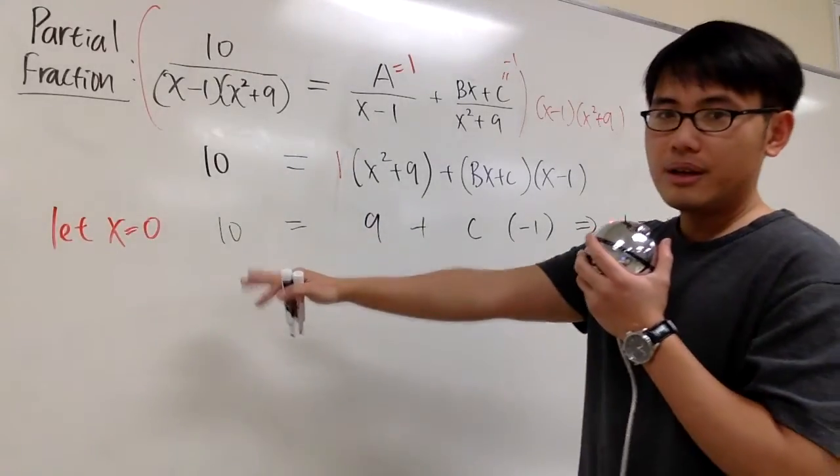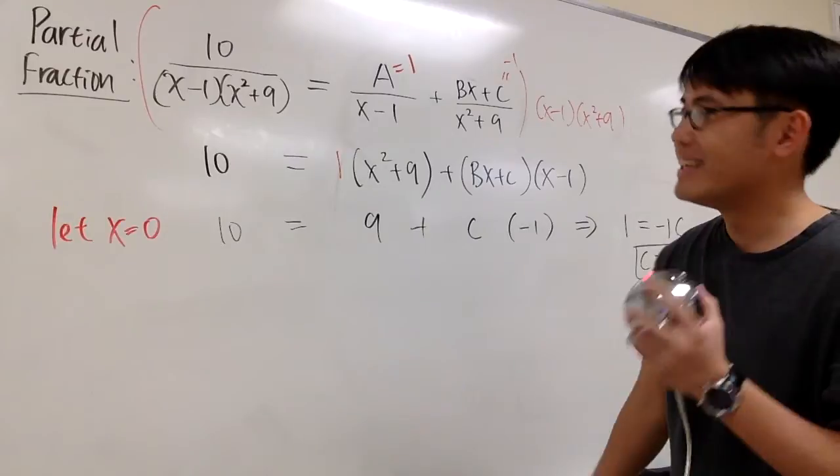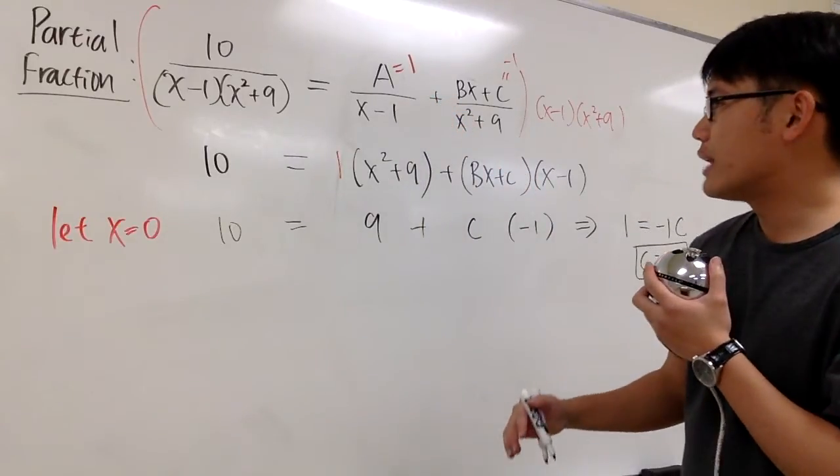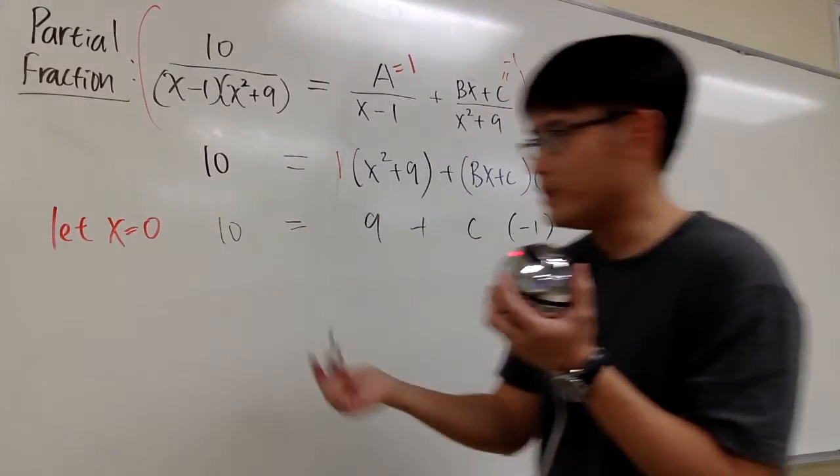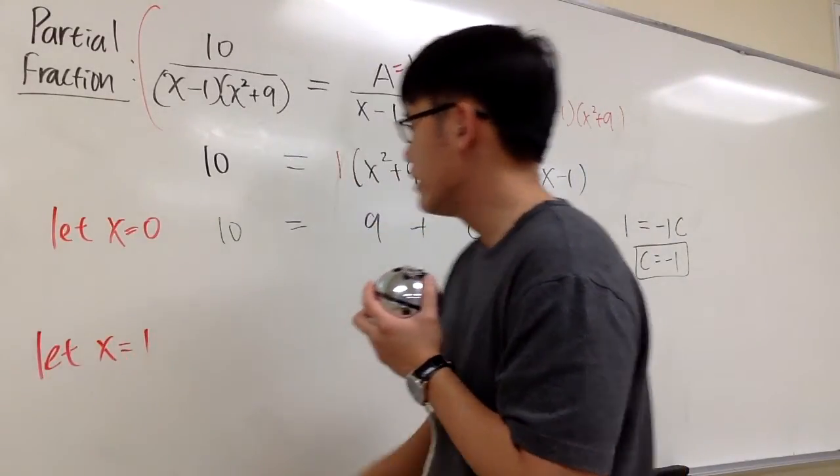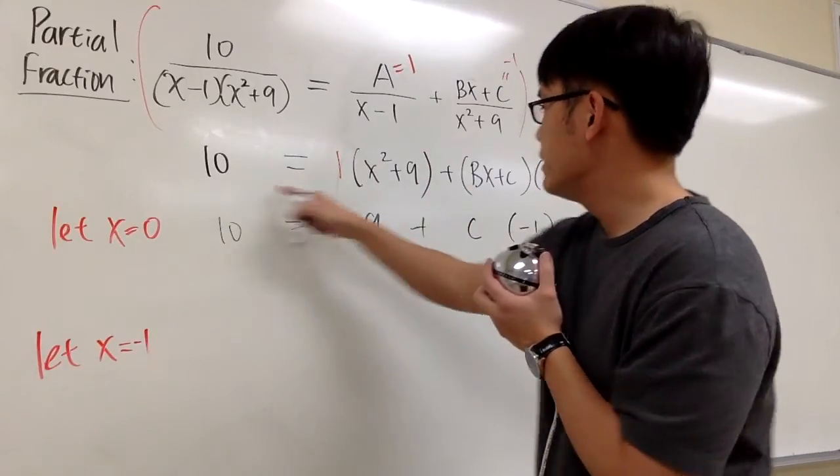All right. I used 0 already. And the next easiest number is x equals 1. But we used it to solve for A. So I cannot use 1 anymore. Perhaps we can use -1. It's pretty simple as well. So let's do it. I'm going to say that x is equal to -1. And let's do that carefully.